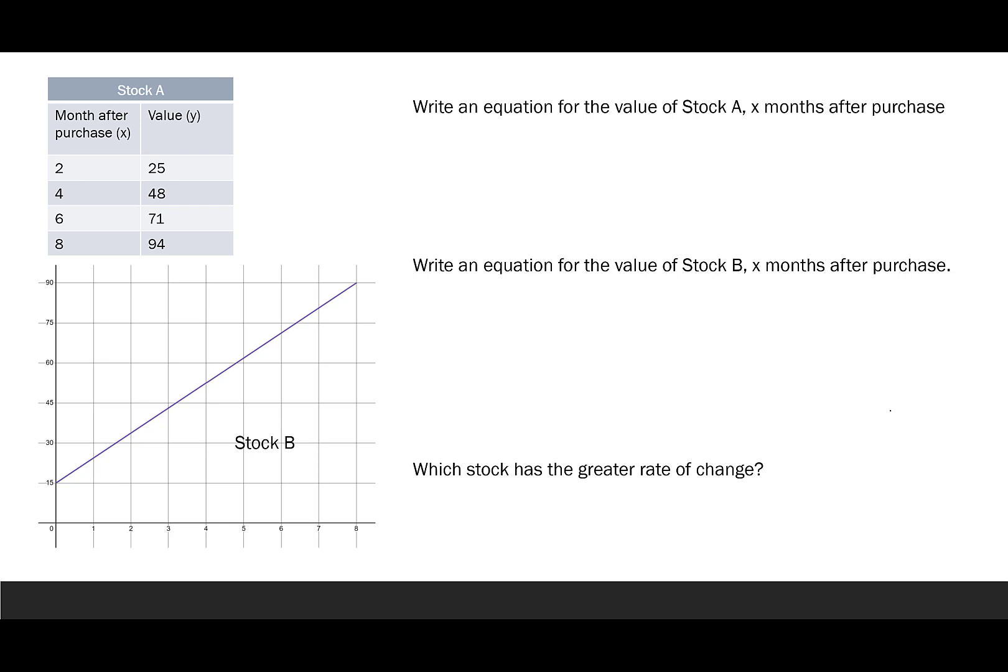We're going to break this into three parts. The first part says, let's write an equation for the value of stock A x months after it was purchased. So if we're trying to write this equation for A, and I'm just going to call it A(x) to show it's the value of A x months later, I need to know mx plus b. So m says, how is it changing? So to get the change, let's just take two months. So I'm going to say m is equal to 48 minus 25 over 4 minus 2. So this is 23 over 2, which is 11.5. I don't have a zero here. I didn't give you where the stock started. I only gave you what's happening months down the road.